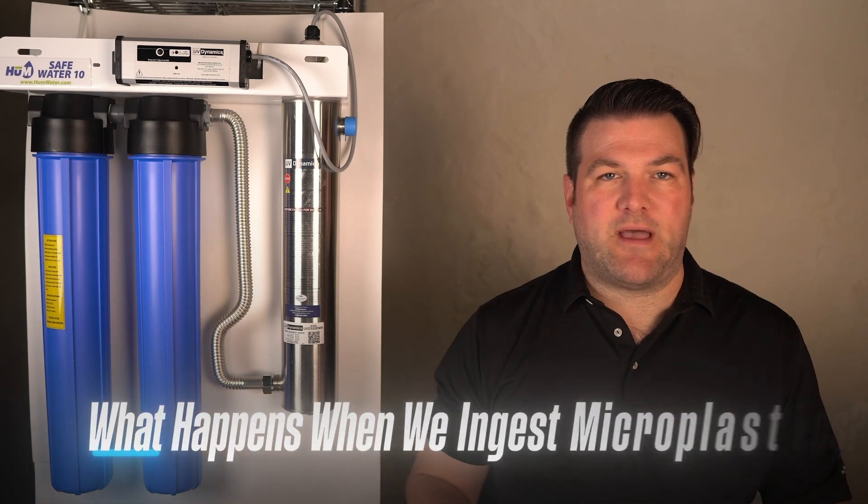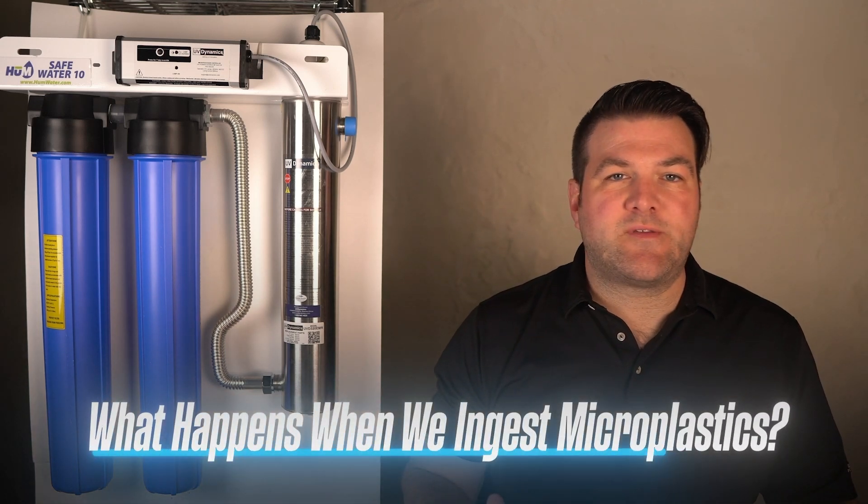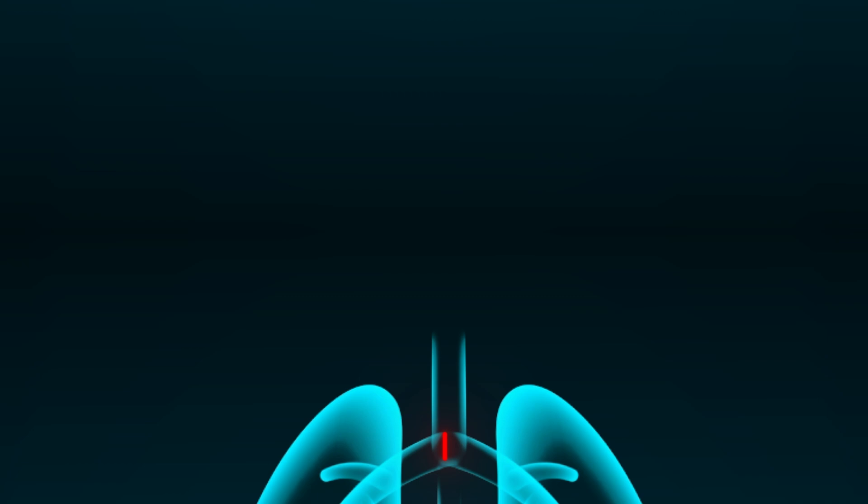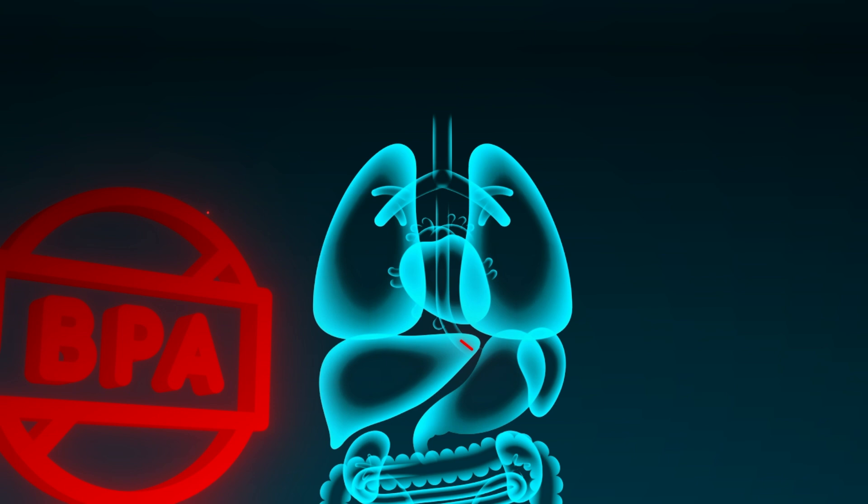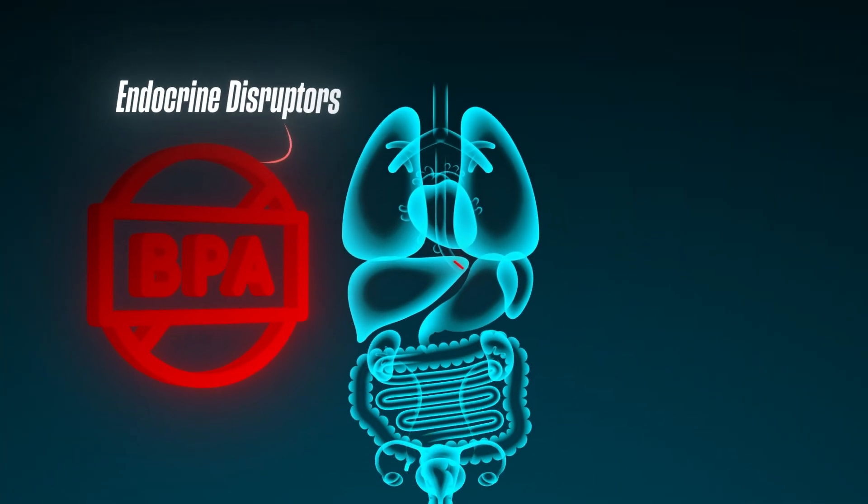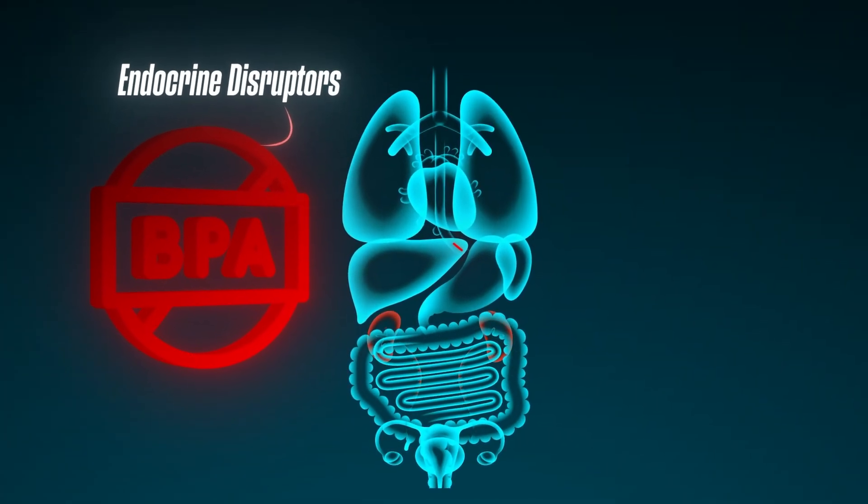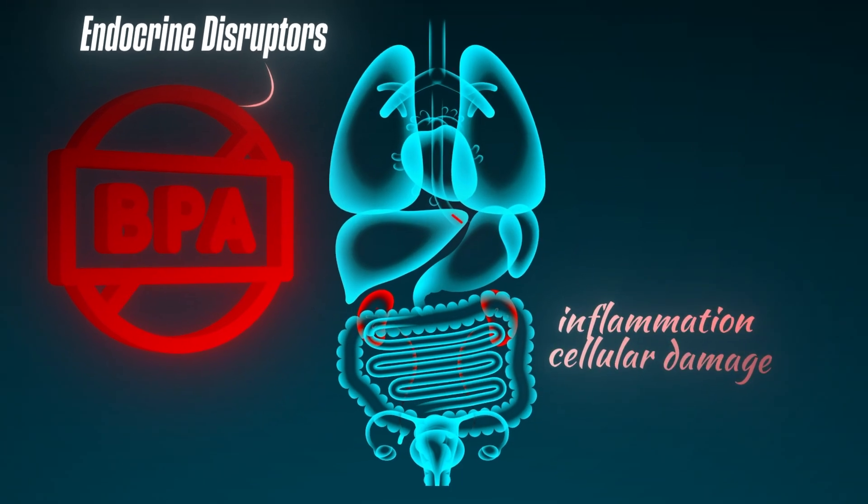What happens when we ingest microplastics? Once they're consumed, microplastics travel through the digestive system and can be absorbed into the bloodstream. They may even carry harmful chemicals like BPA, which are known endocrine disruptors. Over time, they can accumulate in tissues, potentially leading to inflammation and cellular damage.